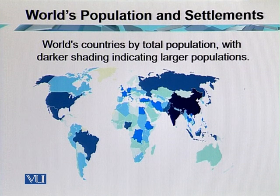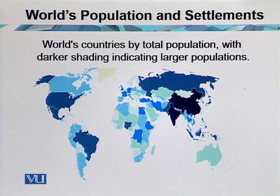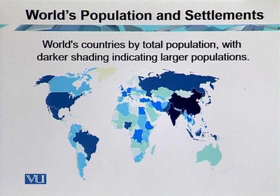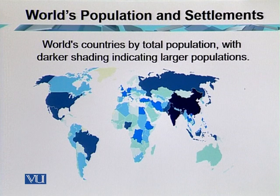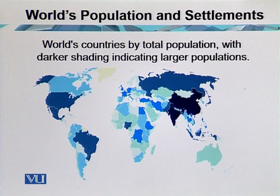Most of this increase is occurring in regions that are least able to support the new arrivals. Millions of young children in less developed countries suffer from disease and malnutrition, and especially girls are at far greater risk than boys in the poorer countries of the world.